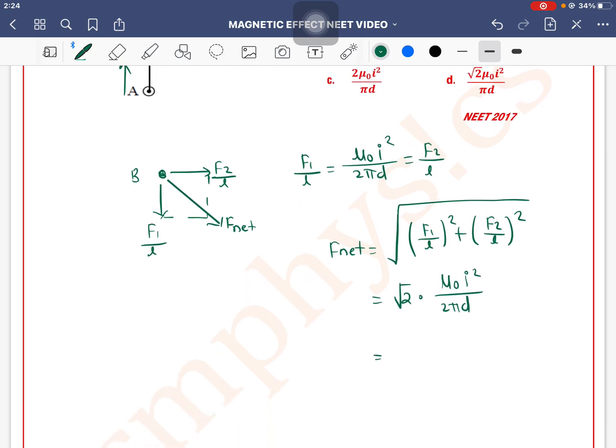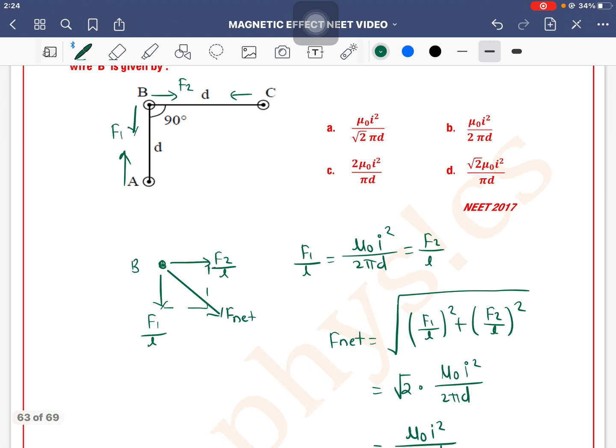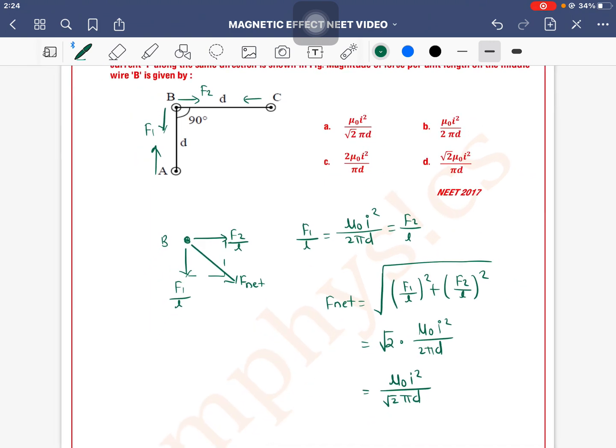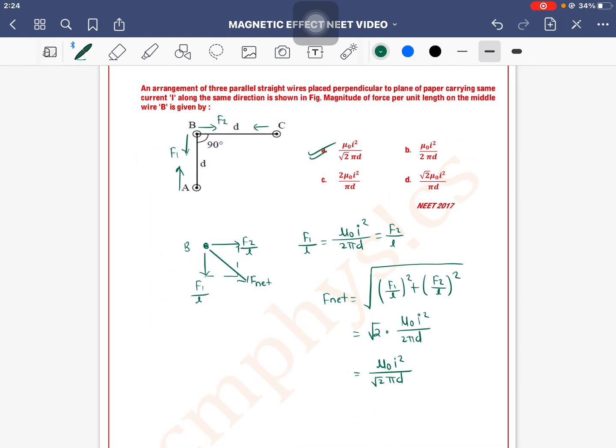Now if 2 cancels, it will come mu naught I squared divided by root 2 pi D. Which means option A is the correct one. Mu naught I squared divided by root 2 pi D. Thank you.